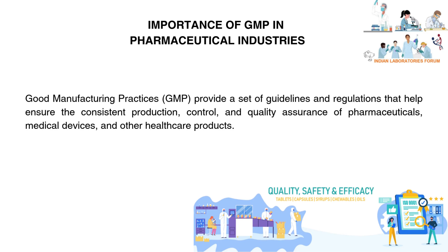Importance of GMP in Pharmaceutical Industries: Good manufacturing practices provide a set of guidelines and regulations that help ensure the consistent production, control, and quality assurance of pharmaceutical products. GMP is a critical system that all manufacturing facilities should implement. They help ensure the proper design, monitoring, and control of the manufacturing processes and facilities. Companies that adhere to these standards help to assure the identity, strength, safety, and quality of their products.